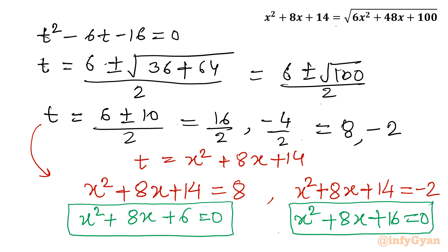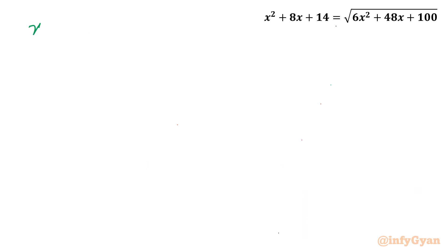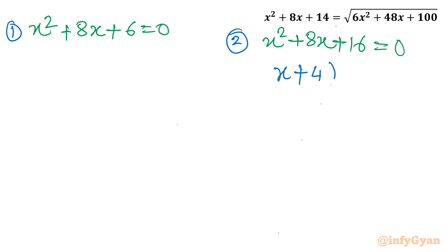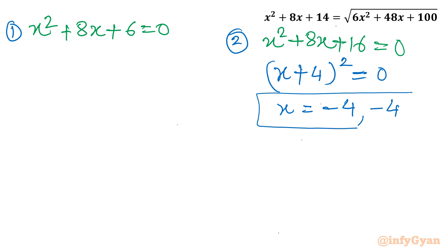Let us solve equation 2 first: x² + 8x + 16 = 0. The left hand side is a perfect square — no need to apply the quadratic formula. It is (x + 4)² = 0. So the solution is x = −4 with multiplicity 2, giving two equal solutions: x = −4 and x = −4.